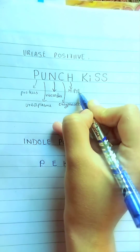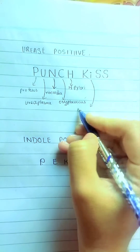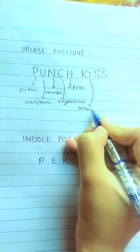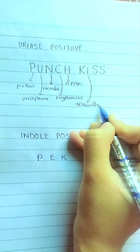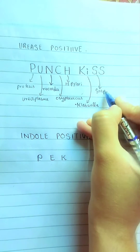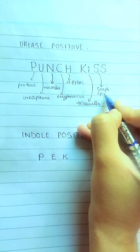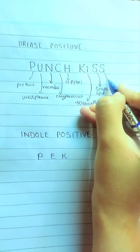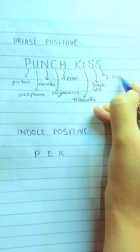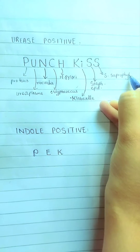K is for Klebsiella, and S is for Staphylococcus epidermidis, and the second S is for Staphylococcus saprophyticus.